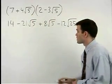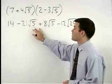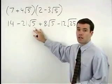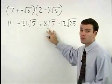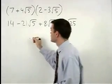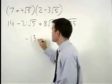In your next step, notice that our middle terms have like radicands and can therefore be combined. Negative 21 root 5 plus 8 root 5 is negative 13 root 5.